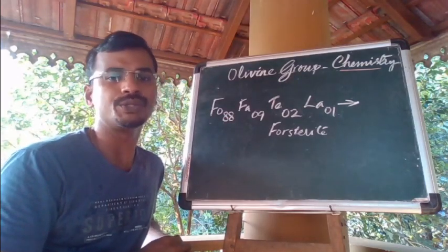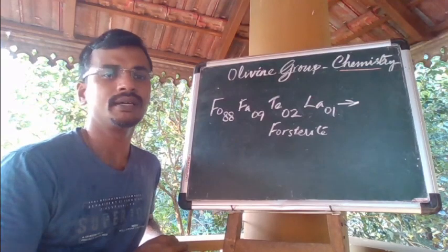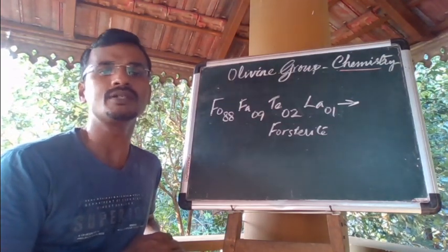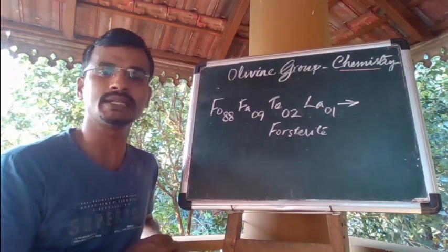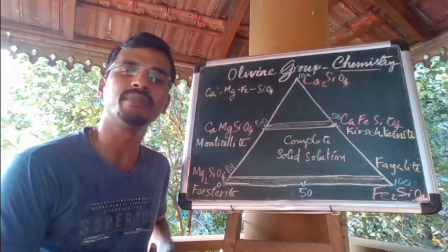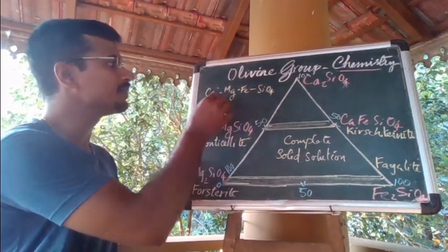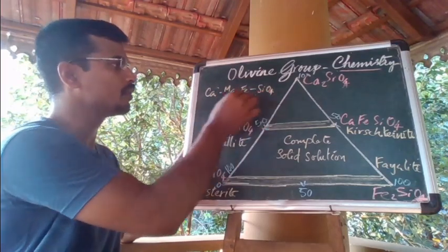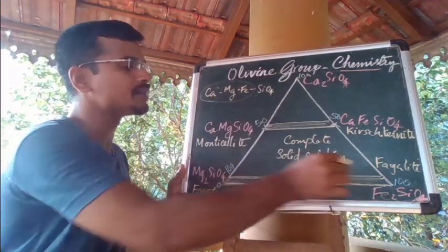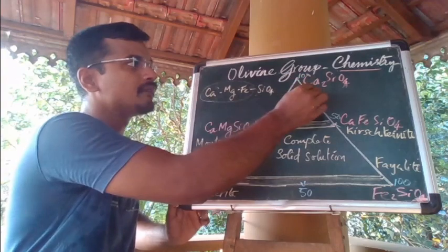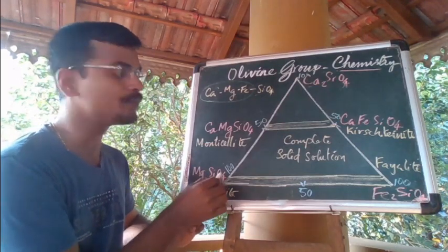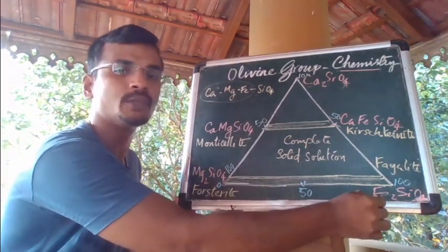The complete solid solution exists between important end-members like forsterite and fayalite and some less important minerals like tephroite. Some limited solid substitutions towards the calcium end-member, that is larnite, are also sometimes possible. The chemical composition of the olivine group of minerals may be represented by a ternary diagram. The system — calcium, magnesium, iron SiO₄ — may be represented with these three major cations forming the three corners of the ternary diagram. On the apex we plot calcium Ca₂SiO₄, on the left side Mg₂SiO₄, and to the right side Fe₂SiO₄.